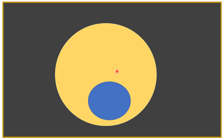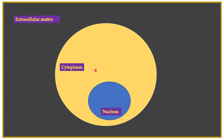When we talk about a signal transduction pathway, you need to keep in mind three important areas of a cell. The first region is known as the extracellular matrix — this is the region present outside the cell. Then you have the cytoplasm of the cell, and the third important region is known as the nucleus of the cell. These are the three important regions to keep in mind when discussing a signal transduction pathway.